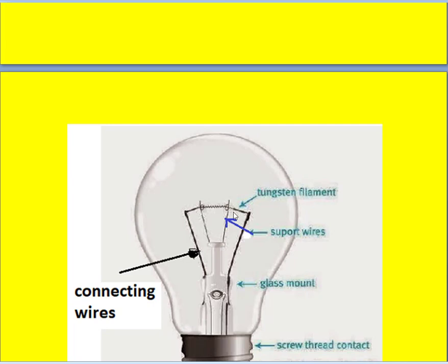Similarly, the ends of the filament is connected to the supply terminals like this. This is one terminal of the tungsten filament goes like this to the line. And similarly, the other connecting wire goes like this and goes to the neutral.